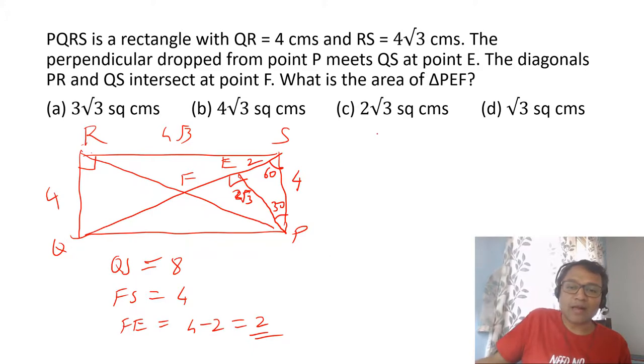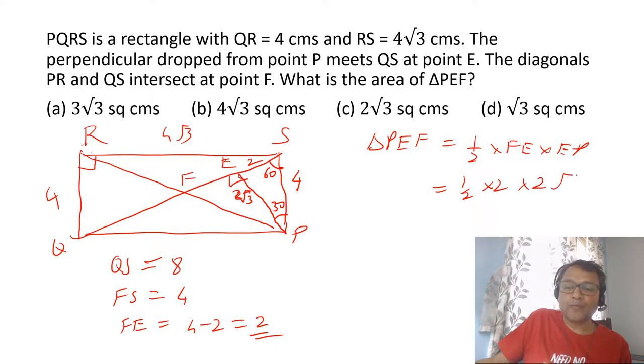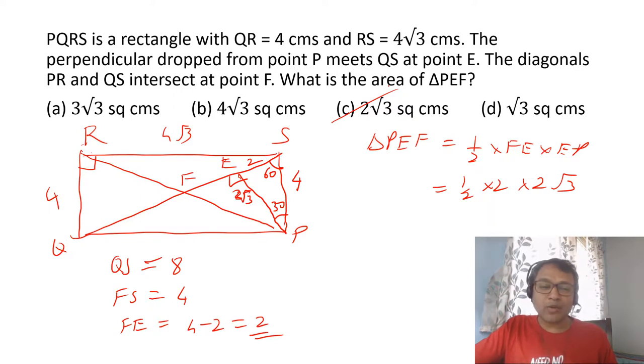Now I can find the area of the triangle. Triangle PEF is half into FE into EP, which is half into 2 into 2 root 3, which will give you 2 root 3. The key is to understand that there is a root 3 there, therefore it should be a 30-60-90 triangle. Once you get that, all the other three triangles become 30-60-90 triangles based on this. Just substitute the values, you can easily get the height PE and EF as the base. From that, you can find the area easily.